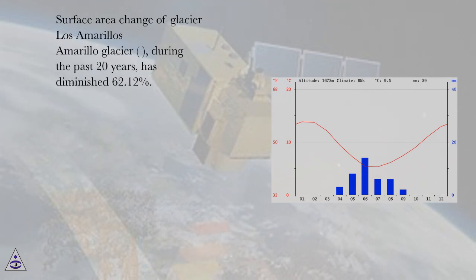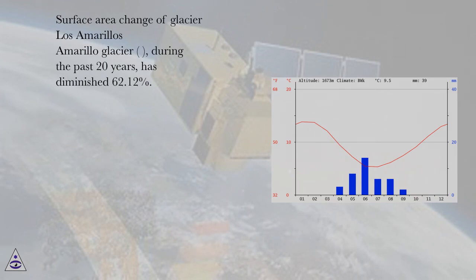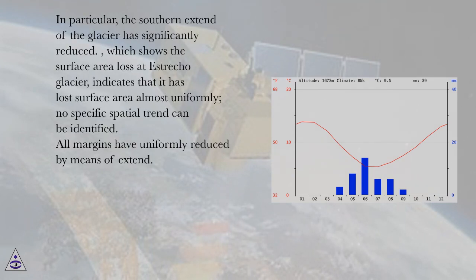For Amarillo Glacier, during the past 20 years, the surface area has diminished by 62.12%. In particular, the southern extent of the glacier has significantly reduced.